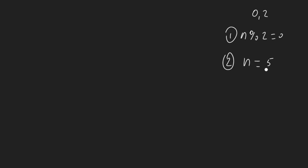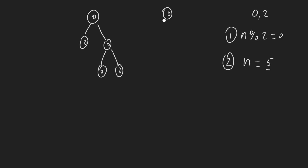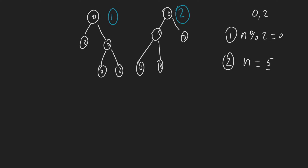Let's take the odd number n equals five. For five nodes, we are going to have two possibilities. The first binary tree has one node on the left subtree and three nodes on the right. The second case is the reverse — three nodes on the left and one on the right.